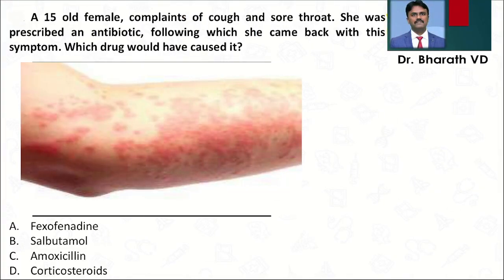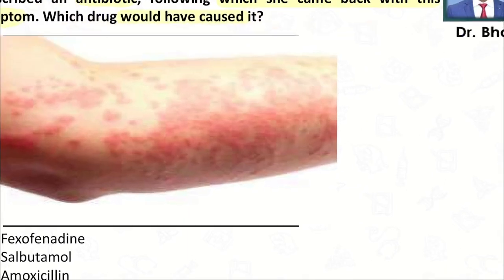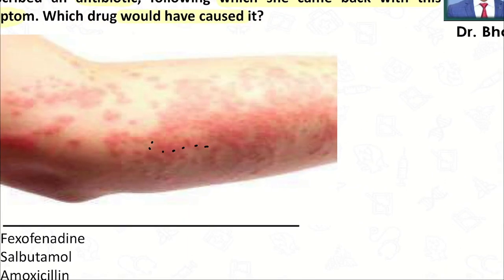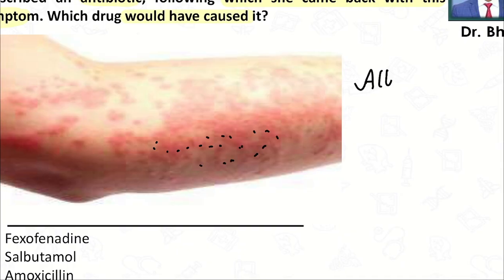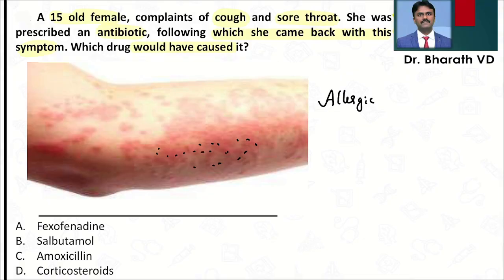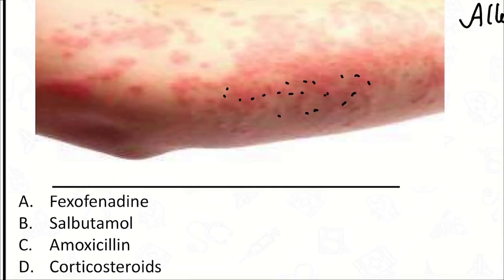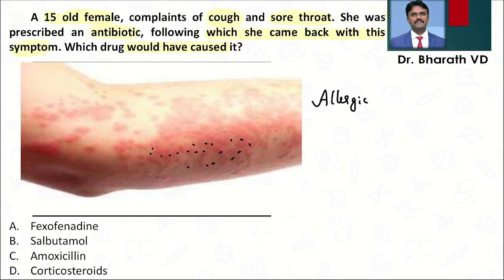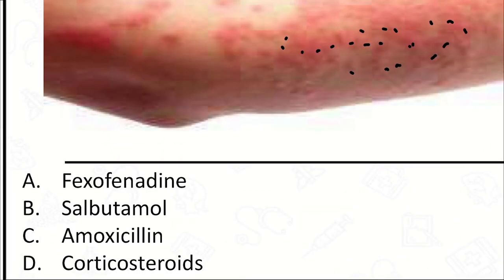Coming to the next question: a 15-year-old female with complaints of cough and sore throat was prescribed an antibiotic, following which she developed a rash. Which drug would have caused it? The image shows the patient has rashes and redness — this is an allergic reaction. The options are fexofenadine, salbutamol, amoxicillin, and corticosteroids. Since the question already states an antibiotic was prescribed, the answer is C, amoxicillin.